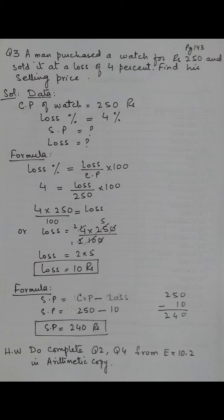Now the formula: selling price is equal to CP minus loss. Selling price is equal to the cost price 250 minus the loss we calculated of 10. 250 minus 10 is 240 rupees. The selling price is 240 rupees. Now complete these two questions from exercise 10.2 in your practical copy. Allah bless you.